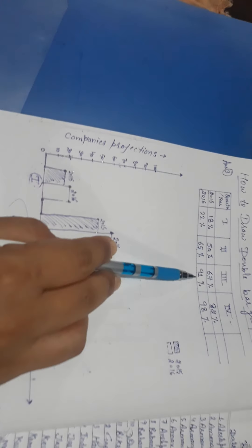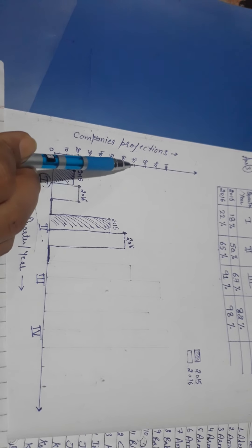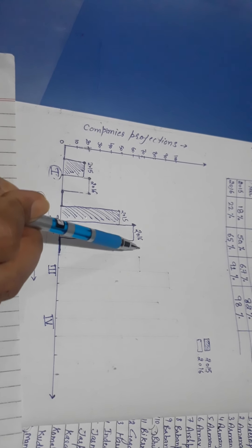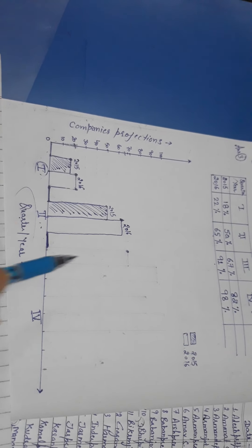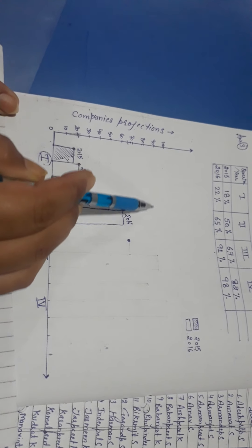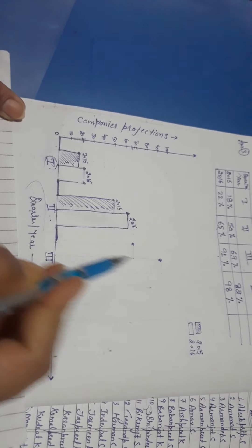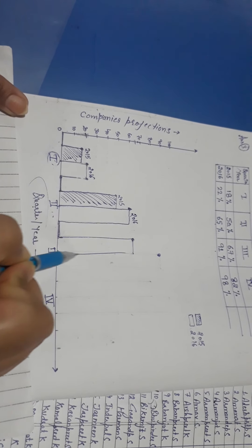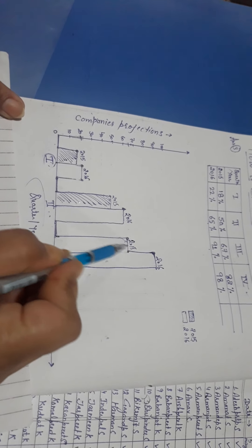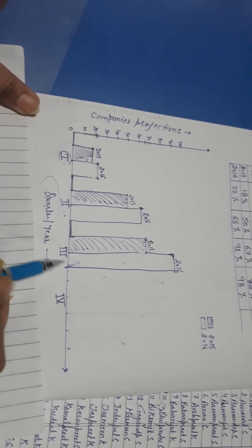Now come to the third quarter. Leave a unit space, then start drawing — it is 67 and 91. For 67, count: 61, 62, 63, 64, 65, 66, 67 — use a scale and draw the bar here. For 91, it will be just after 90, so mark it here. Draw both bar graphs: this is for 2015 and this is for 2016. Shade the 2015 bar.